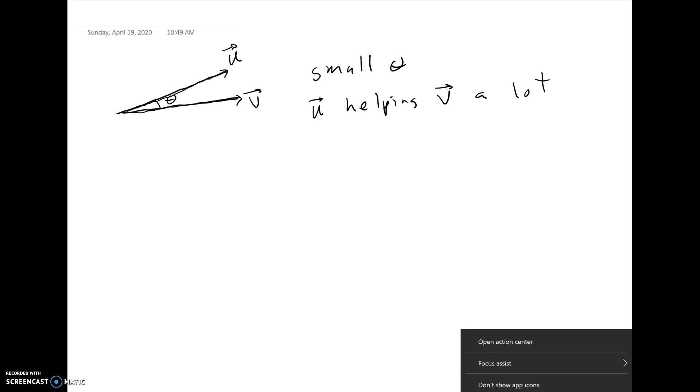So let's look at some scenarios. So here we have vector u, we have vector v. So if the two vectors are very close to each other, in other words, the angle is very small, then you can see that if you're pulling the wagon, almost 100% of the force you're using to pull the wagon is actually being used to pull the wagon. It's very efficient. So you have a very small angle. We have vector u is helping vector v a lot. We'll quantify this in a minute, but for now, we're just getting the basic ideas.